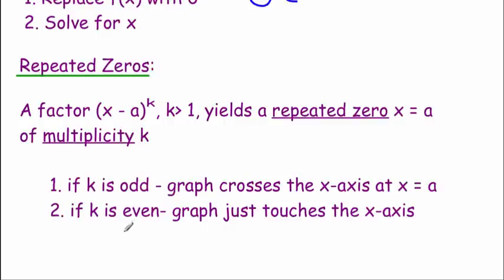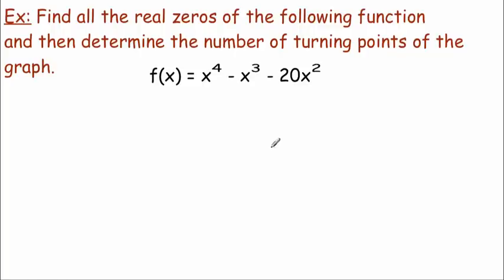In this example we've got f(x) = x⁴ - x³ - 20x². We're going to find the zeros and figure out the number of turning points. I'll look at turning points first since that's the easiest part. The highest power is four, so we can have at most n minus 1 turning points — meaning at most three turning points.